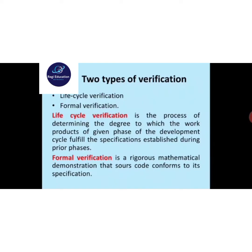There are two types of verification: life cycle verification and formal verification. Life cycle verification is the process of determining the degree to which the work product of a given phase of the development cycle fulfills the specification established during prior phases.